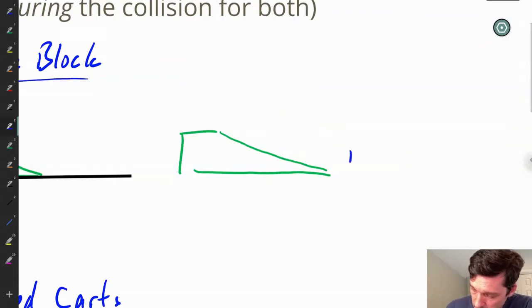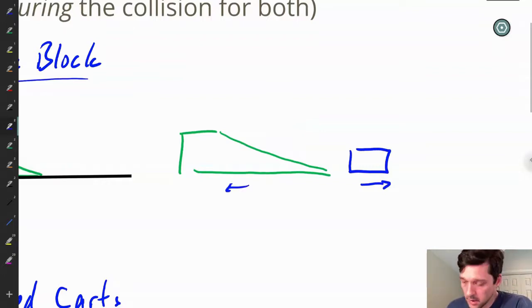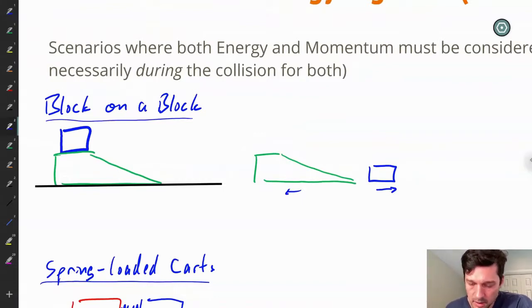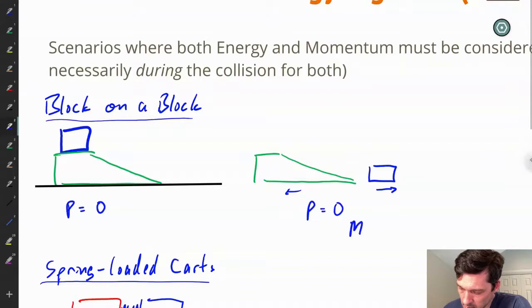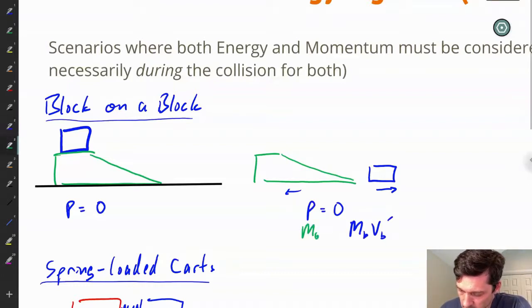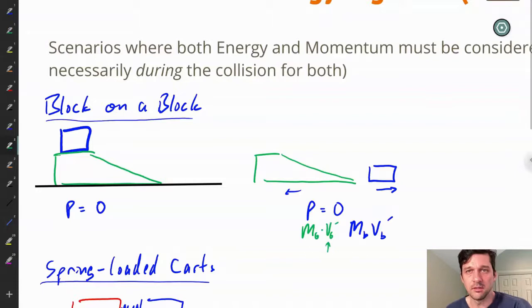So by the end of the interaction, once the blue block is off the green block, the blue block is moving to the right and the green block is moving to the left. One question is how fast are they each going to be moving. The momentum before is zero, so the momentum afterward still has to be zero: mass of blue times its velocity (positive) plus mass of green times its velocity (negative) equals zero.